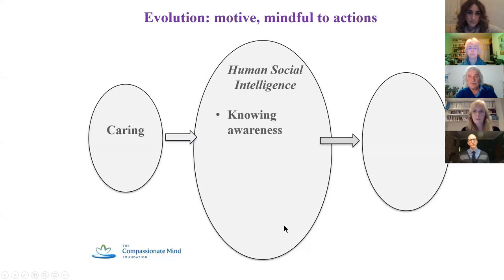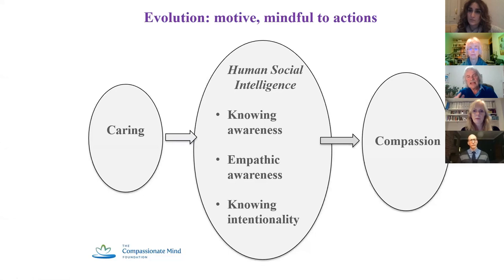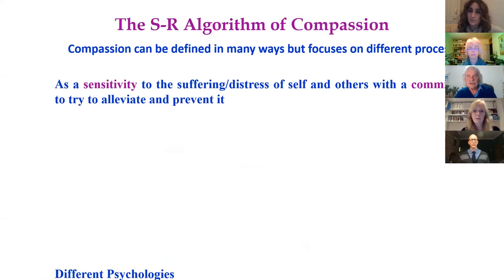This is important because it also gave rise to intelligence. And it's our intelligence that turns caring into compassion — what we call knowing intentionality. When we can use a caring motivation knowingly, then that becomes compassion. Caring behavior in animals is caring behavior, but compassion is when we bring this awareness to how to address issues of suffering.